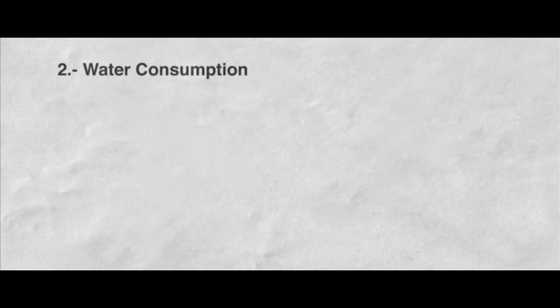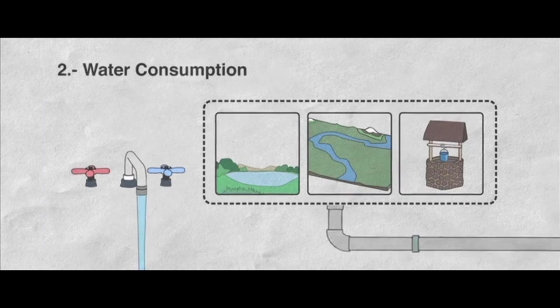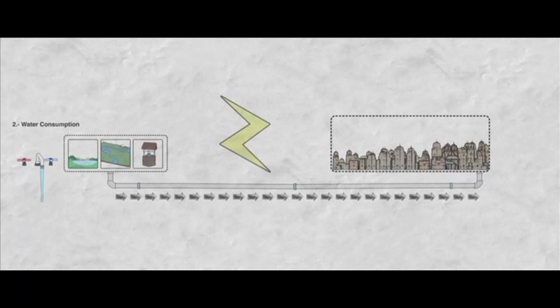Two, water consumption. The water you normally get from the grid is pumped from lakes, rivers and underground water, often traveling long distances for human usage, consuming a lot of energy.